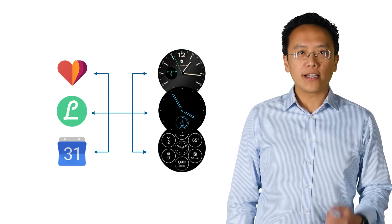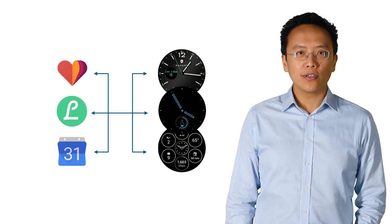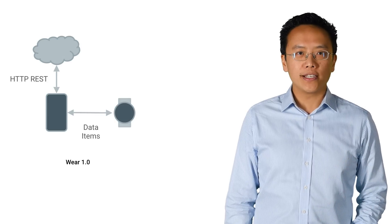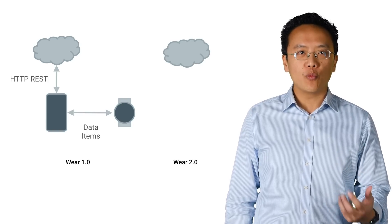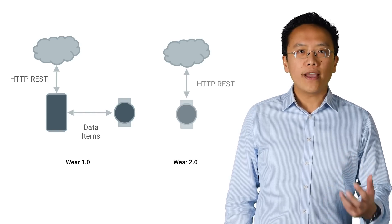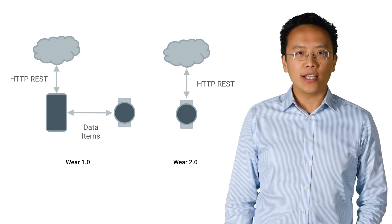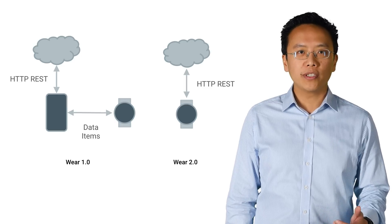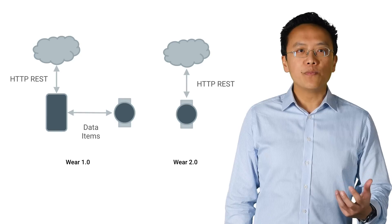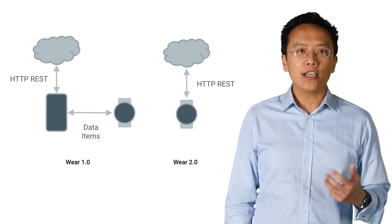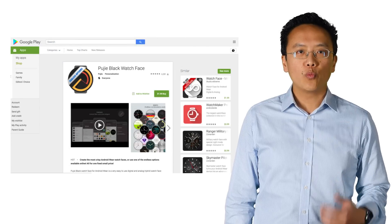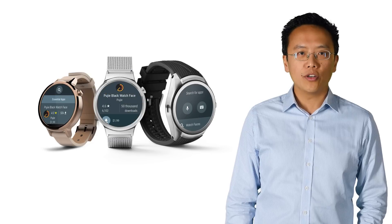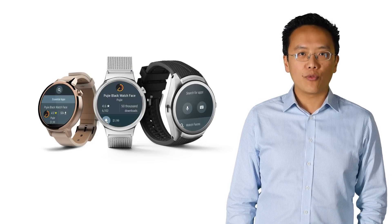Check out the watch face and complications sections of the developer documentation for more details. Last but not least, standalone functionality. Previously, Android Wear 1.0 apps required a phone app to communicate with the cloud. With Android Wear 2.0, Wear apps can access the internet directly without the need for a corresponding Android phone app installed. This means the Android Wear app can access the internet even if the user has an iPhone. To help with app distribution, we have also put the Google Play Store on the watch. Users can now download apps directly on their wrist.